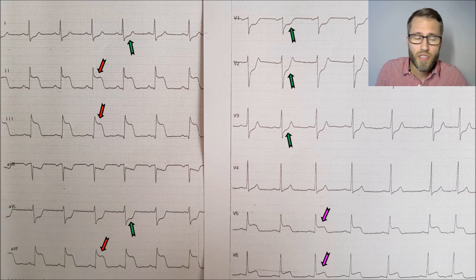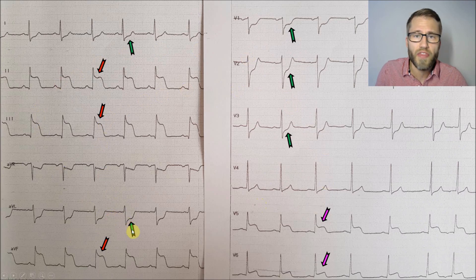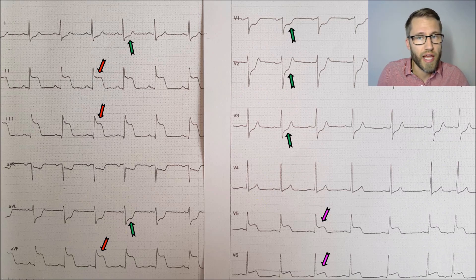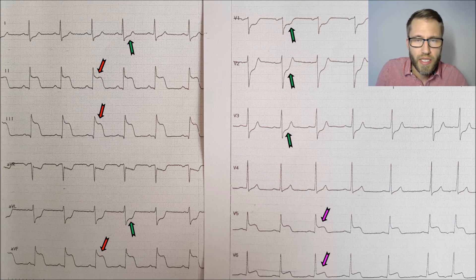So it would be nice to try to define the culprit vessel just from looking at the ECG and then decide whether the culprit lesion will be in the LCX or the RCA, going directly with an EBU or a Judkins right catheter into the right vessel.